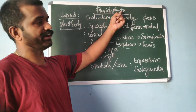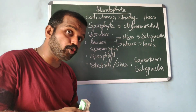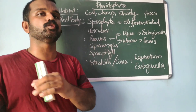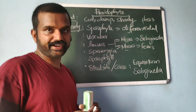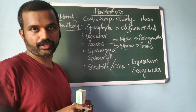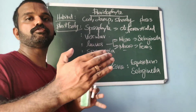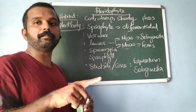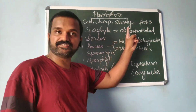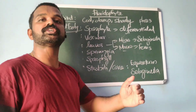The main plant body of pteridophytes is the sporophyte. In the two previous groups — algae and bryophytes — the gametophyte is the dominant plant body, but here, for the first time in plant evolution, the sporophyte becomes the dominant plant body.